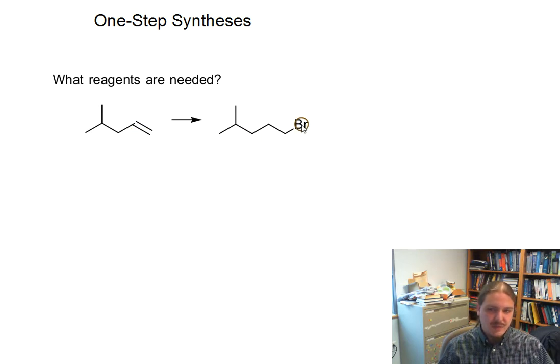We've added a bromine. It's at the end of the chain. There's one hydrogen here, there are two hydrogens here. So we're going to add HBr, and we're going to add it using peroxides so that we get the anti-Markovnikov regiochemistry.